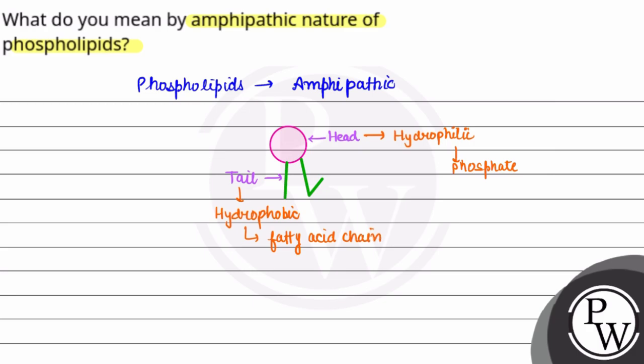We have two components: one is hydrophilic and one is hydrophobic. This is why we call it amphipathic nature — there are two types of nature. The phosphate part is the head, which is the polar head. And the tail is nonpolar.